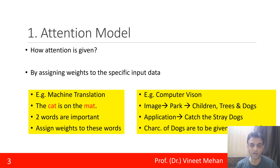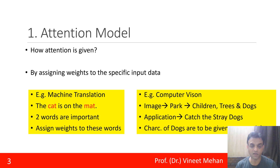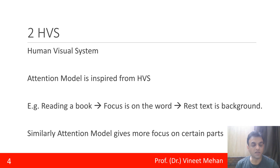Another application area is computer vision, where we have an image of a park containing children, trees, and dogs. If the application is to catch stray dogs, we are supposed to put focus on the characteristics of the dogs in the image — such as a dog has four legs, sharp teeth, and a tail. These characteristics are what we focus on.